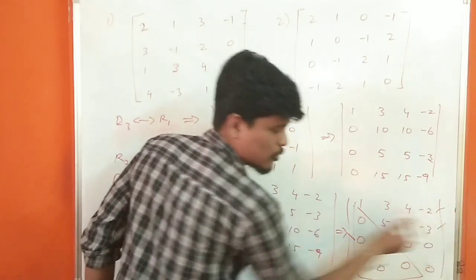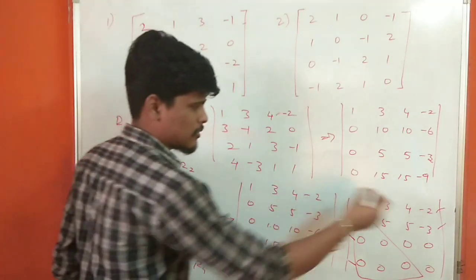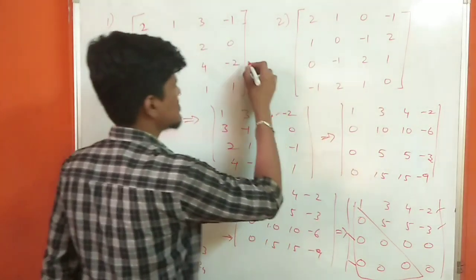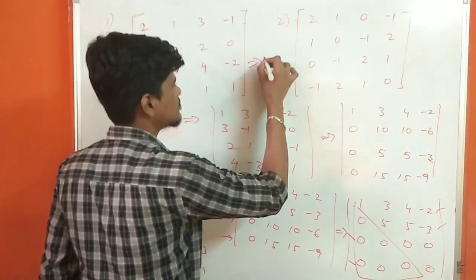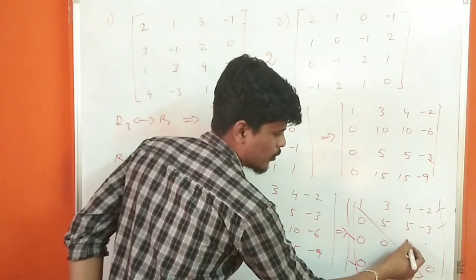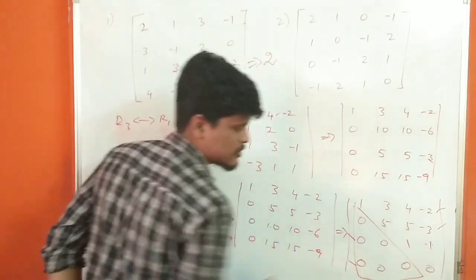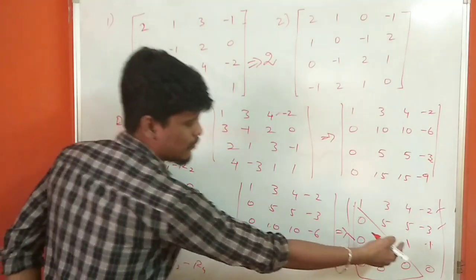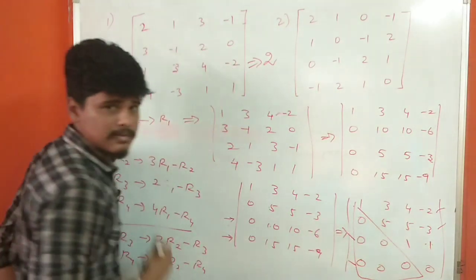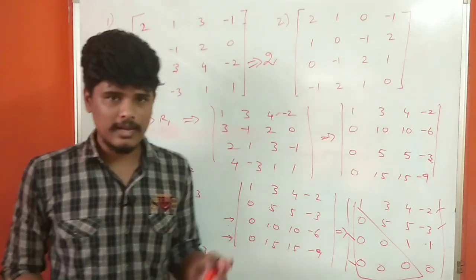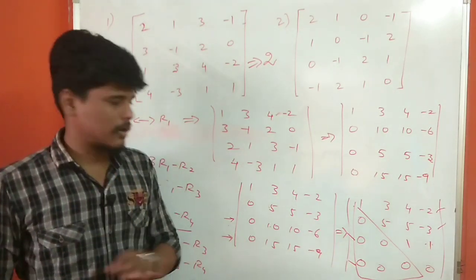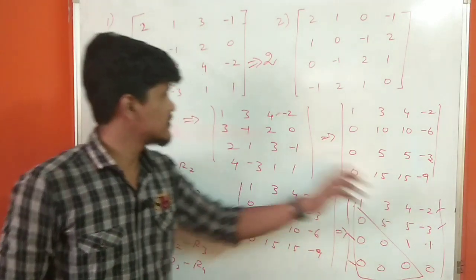This row is zero and this row is zero, so there are 2 non-zero rows. If we have 2 non-zero rows, the rank is 2. Non-zero rows equal the rank — that is very important.